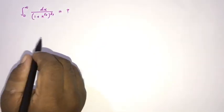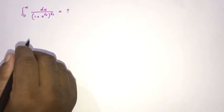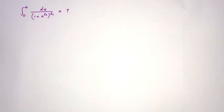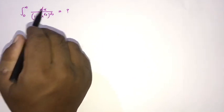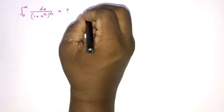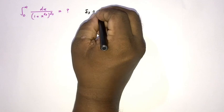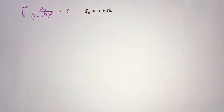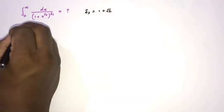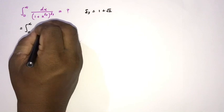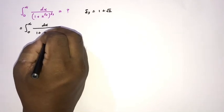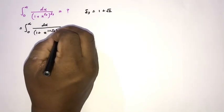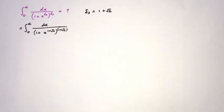Hi, welcome to the Mathematics of My channel. In this video we are going to solve another beautiful integral: the integral from 0 to infinity of dx over 1 plus x raised to the delta-s, where delta-s is the silver ratio, equal to 1 plus square root of 2. So our integral is the integral from 0 to infinity of dx over 1 plus x raised to the power 1 plus square root of 2.